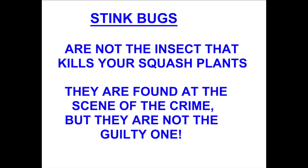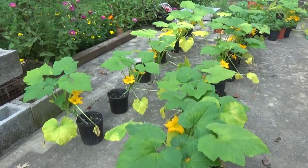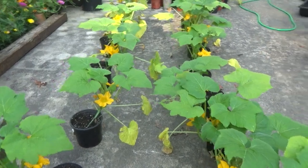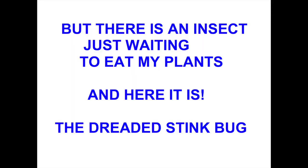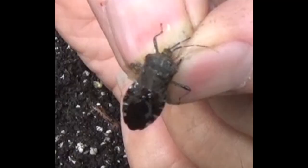Now, many folks think that the stink bug is what kills your squash plants, but that is really not the truth. Here are my squash plants on a typical spring day, getting ready to put them in the garden. This is a female stink bug that I'm showing you — it might have been the one that laid the eggs I'm going to show you next. Here you see eggs attached to the underside of the leaf, but they also lay eggs on the top side of the leaf, as you'll see a little bit later in this video.